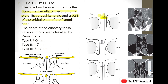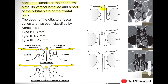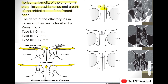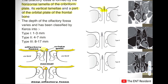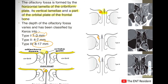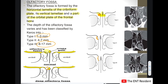The depth of this olfactory fossa has been classified by Keros — this is known as the Keros classification of the olfactory fossa, divided into three types. As seen in this picture, on the left is the olfactory fossa at normal depth. Type 1: depth of 1 to 3 mm. Type 2: depth of 4 to 7 mm. Type 3: depth of 8 to 17 mm. These are the three types of the Keros classification based on depth.